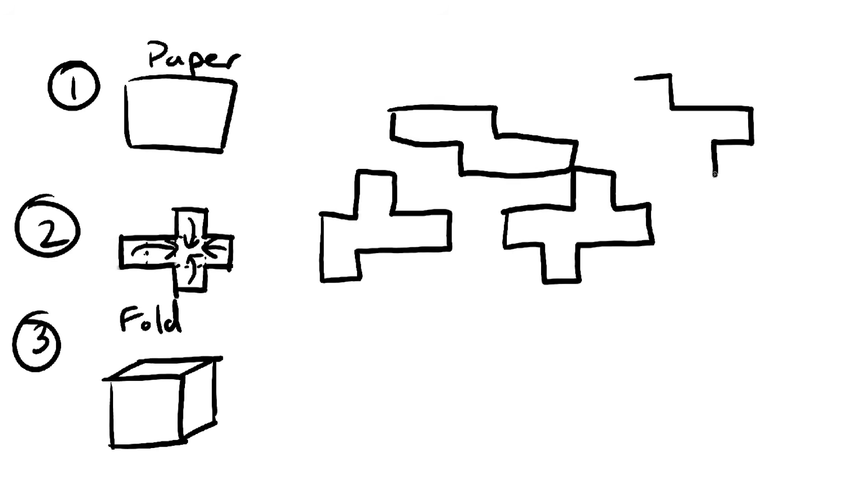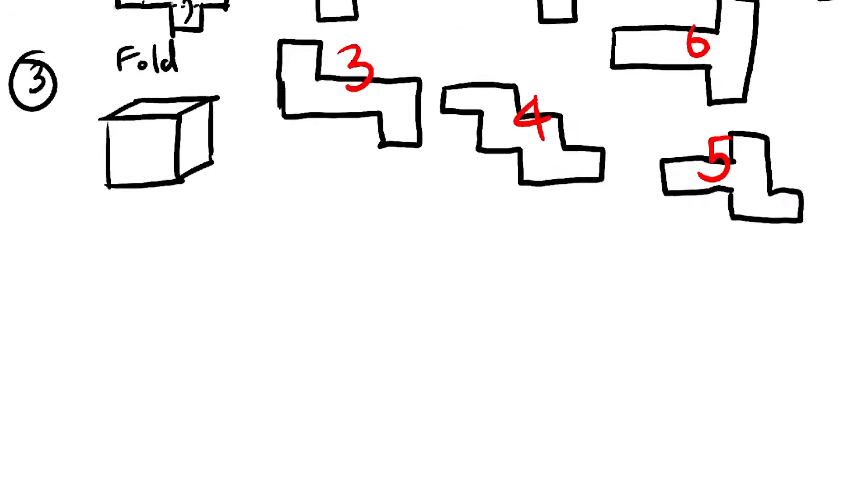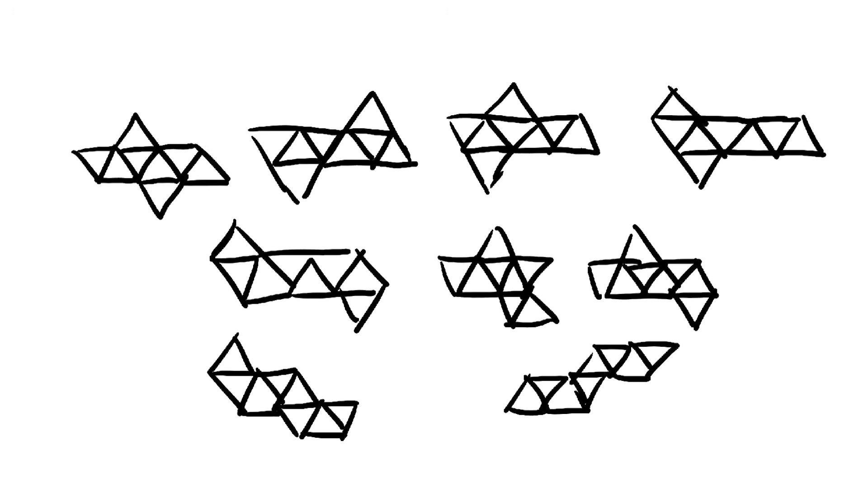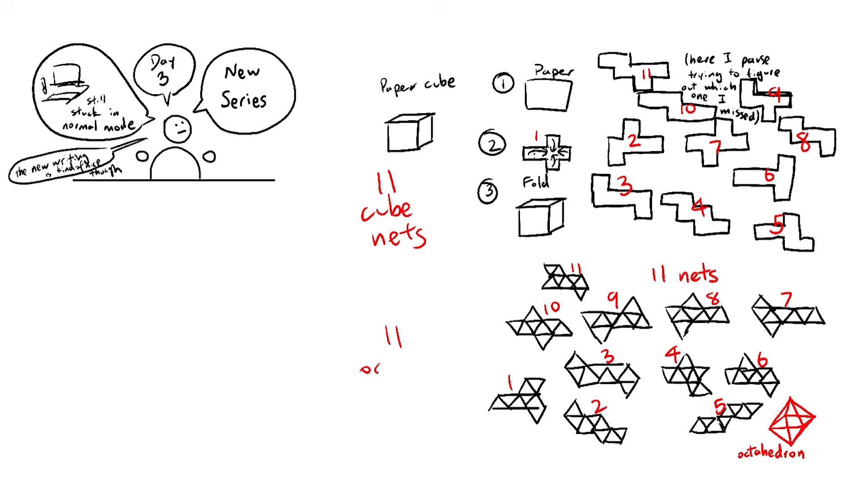It turns out there are 10 other shapes that can also fold up into cubes, so 11 total. But that's not the interesting part. There are also exactly 11 nets - that's what we call them - that fold up into octahedrons. The numbers match up for some reason. And it keeps going. There are 43,380 icosahedron nets and also 43,380 dodecahedron nets.